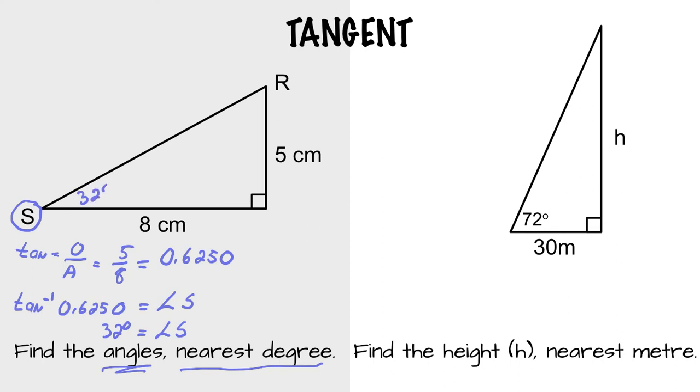So if this is 32, R has to be 58. Those two angles are complementary angles. So they have to add to 90.